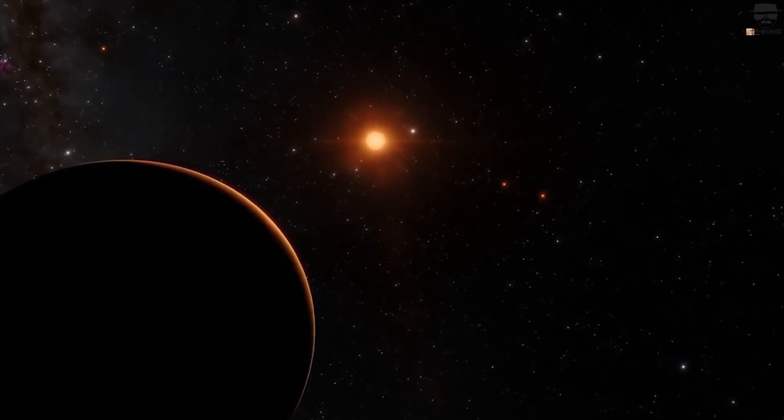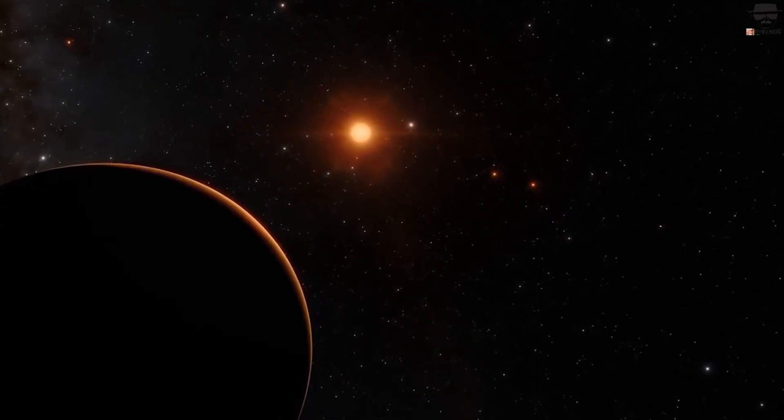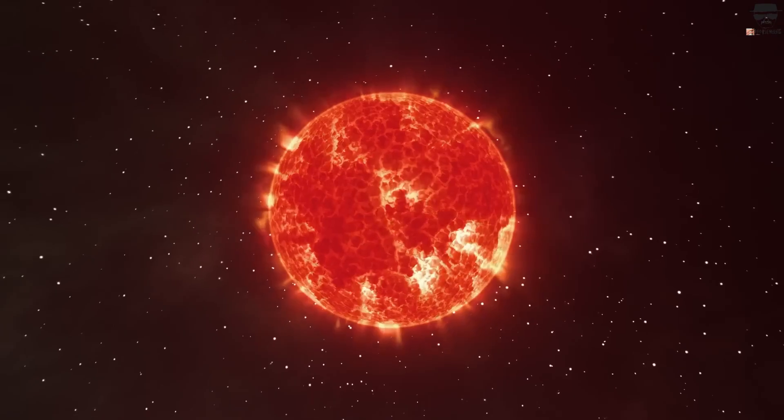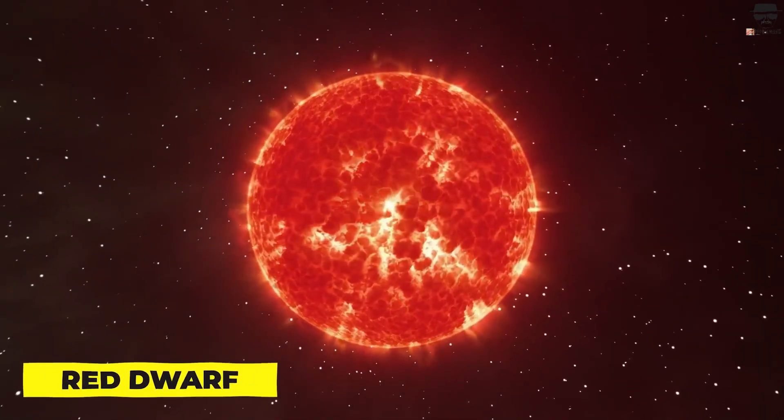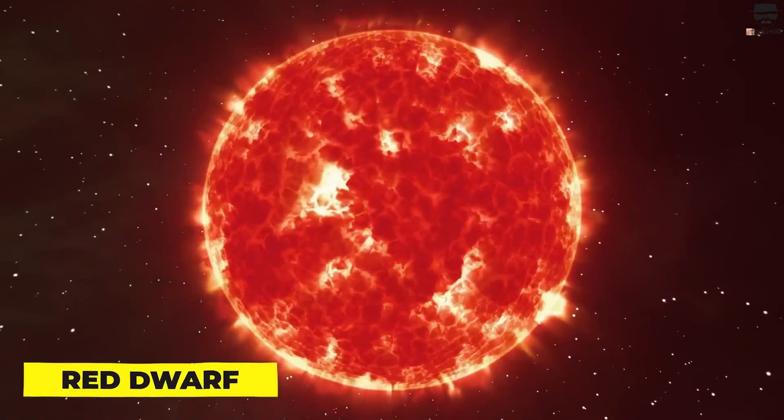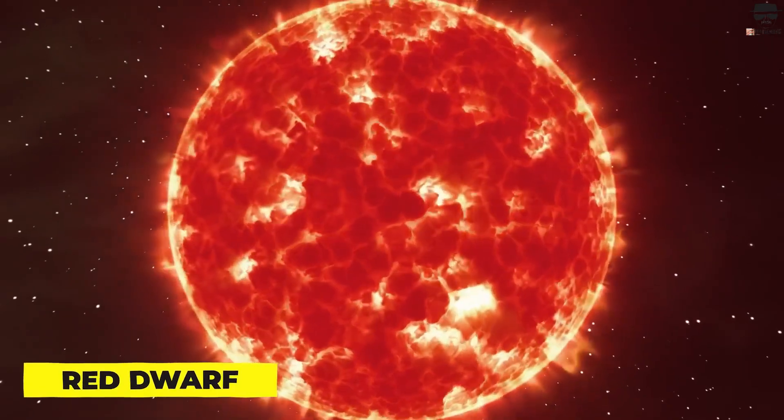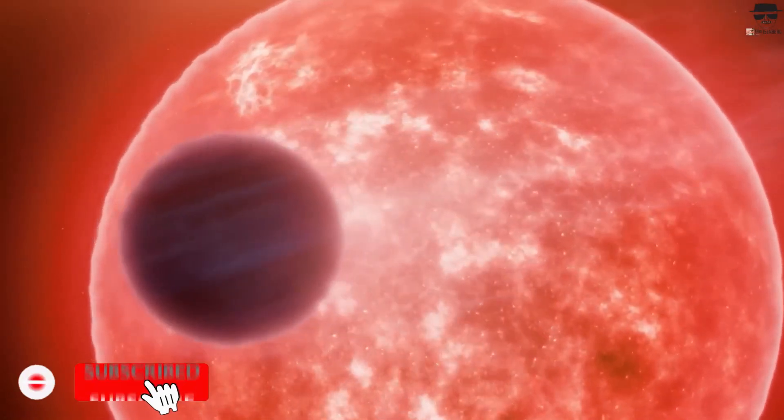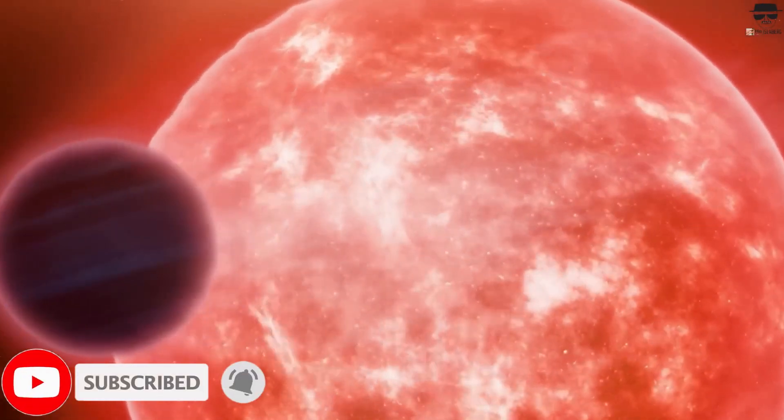Planets revolving around red dwarf stars, which are more prevalent and have a lower luminosity and temperature than the sun, may be a more likely subject of study. Because of the substantially longer life spans of these stars, there is more time for the emergence of life and evolution to produce complex life forms.